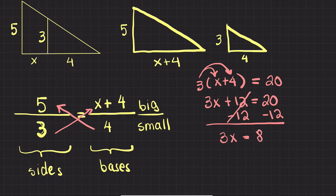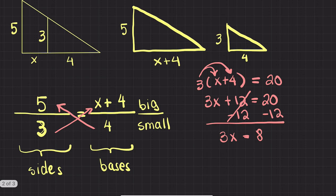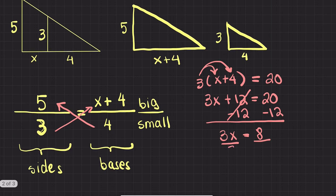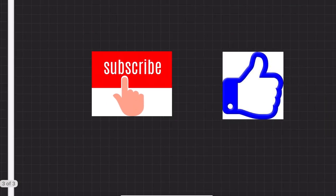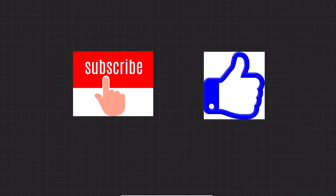Now I need to get rid of the 3, which is multiplying X, so I divide both sides by 3. This cancels the 3 and leaves X by itself: X equals 8 over 3. That is my answer for this problem. I hope you enjoyed this video — see you on the next one, bye!